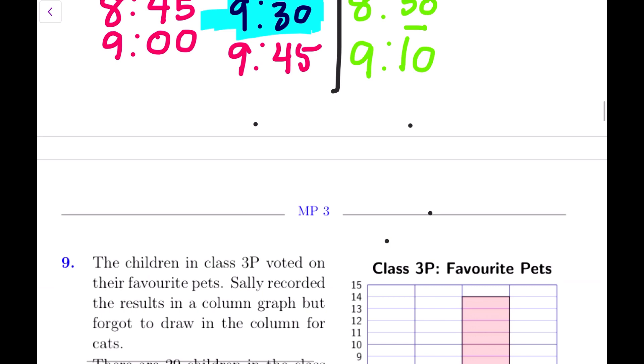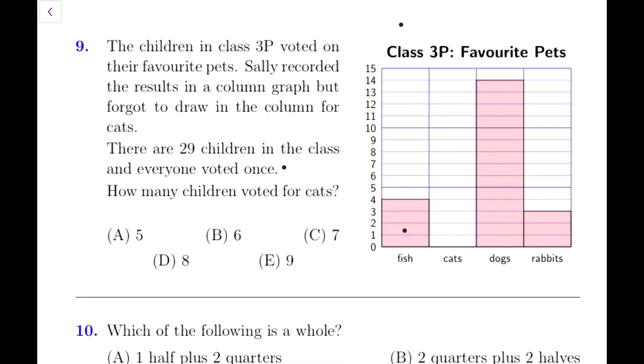Alright, let's move to the next question. Question number 9: The children in class 3P voted for their favorite pets. Sally recorded the results in a column graph, but forgot to draw the column for cats. Let's have a look. We have the column for fish, here are the number of children who voted for fish. Here is for cats, which she forgot to draw. We have dogs and we have rabbits. We have columns for all other animals except for cats. There are 29 children in the class and everybody voted just once. How many children voted for cats?